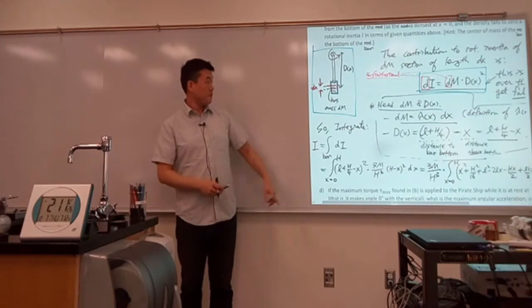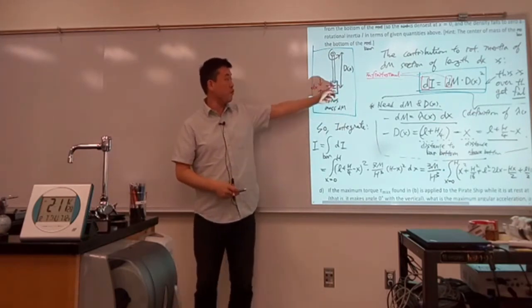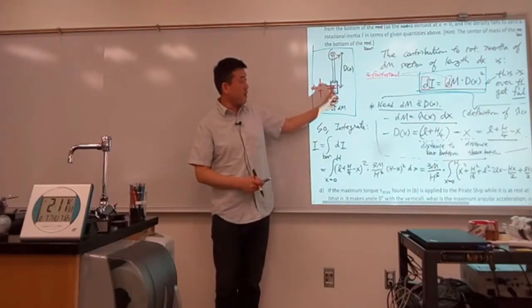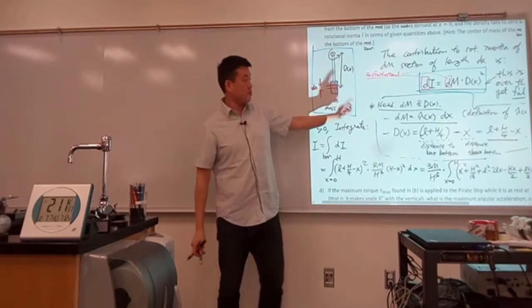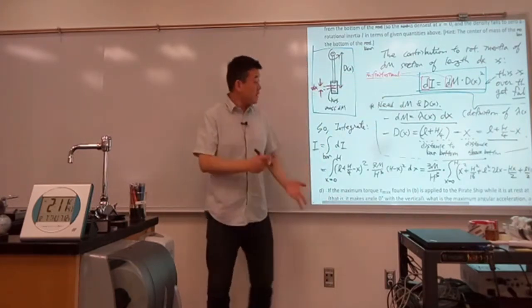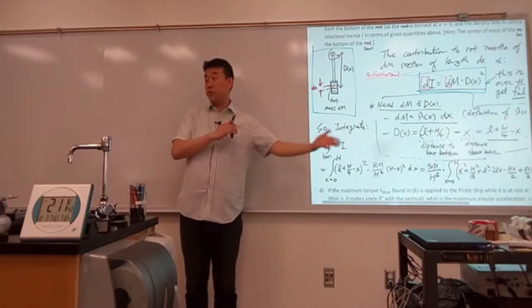So when you take that small portion, it's going to have some amount of mass dm. And for this very small portion of the object, we can say that this contributes rotational inertia dI to the whole thing. So that's the conceptual step you need to go through.